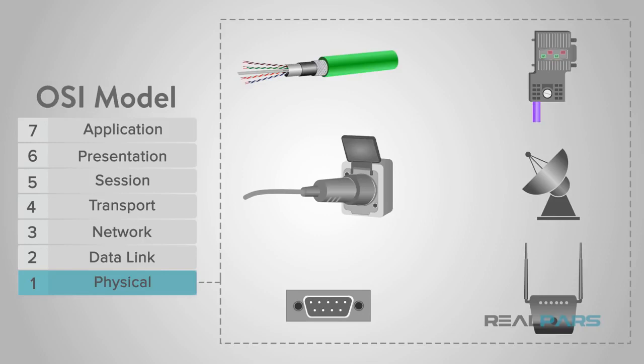Is the device plugged in? Is the wireless card working? At this layer, the model transmits the digital data bits from the source or sending device's physical layer, over network communications media — which can be electrical, mechanical, or radio — to the receiving or destination device's physical layer.